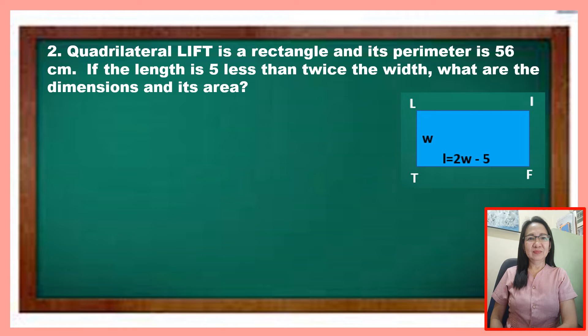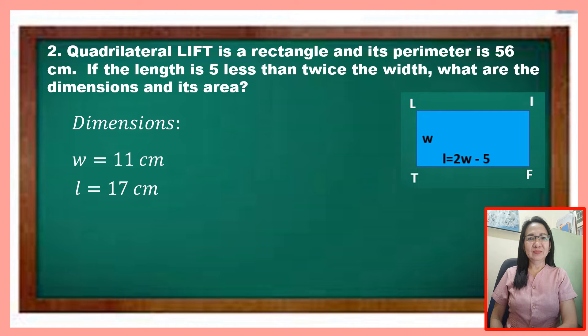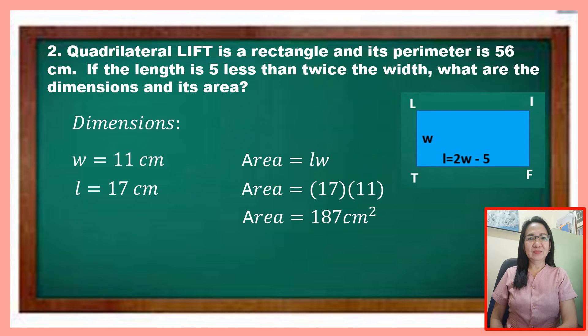The required dimensions of the rectangle are: width equals 11 cm and length equals 17 cm. To find the area using length times width: the area equals 17 times 11, which is 187 square centimeters. Now let me give you another problem.